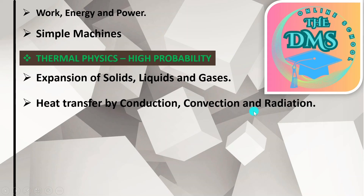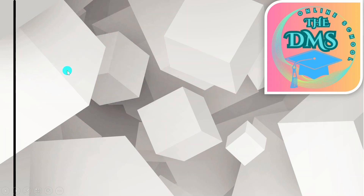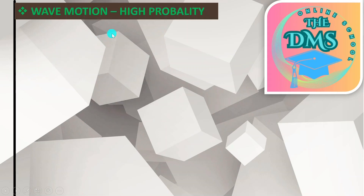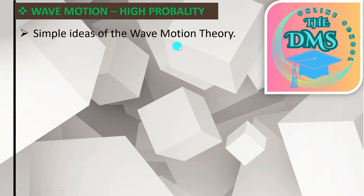Next is Wave Motion, also written in green with 'high probability.' This topic has a high probability of being in the CSAS examination because the recent GCE exam did not contain questions on waves, especially from section B and section C. So this year you should expect this to be there. The subtopic under here is simple ideas of wave motion theory.